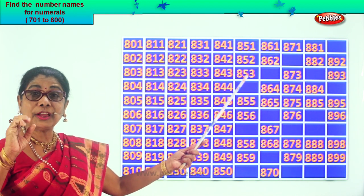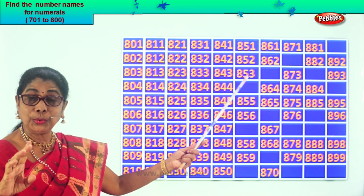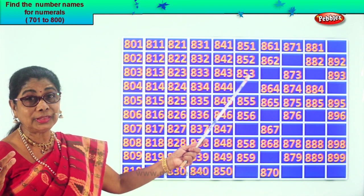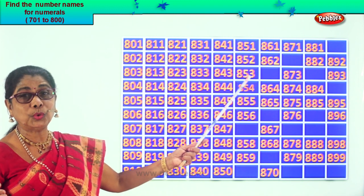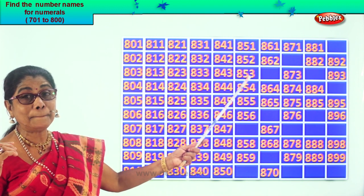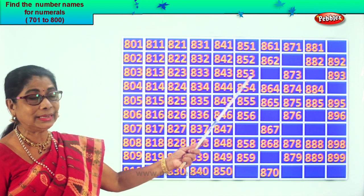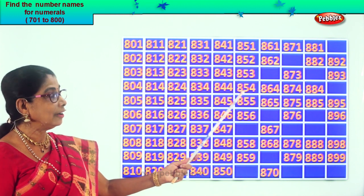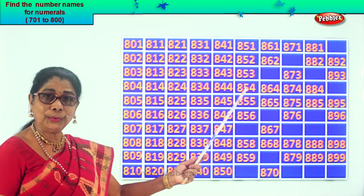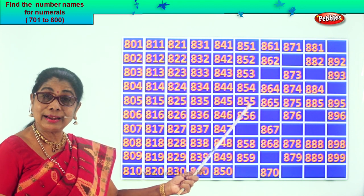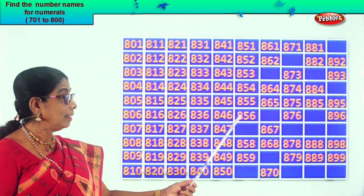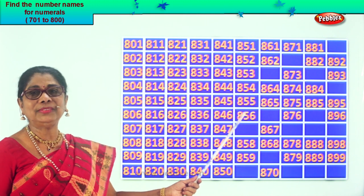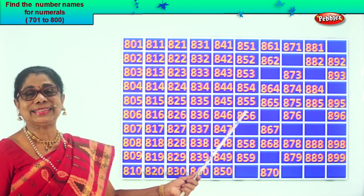After 53 comes 54. So the missing number is 854, then 855, 856.